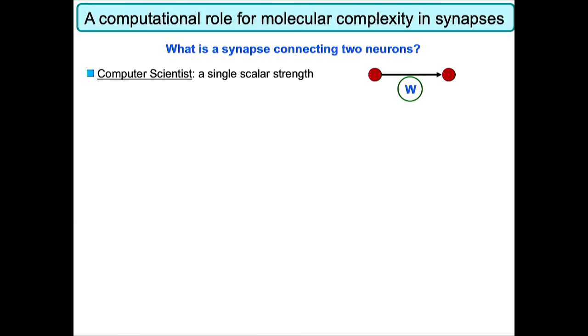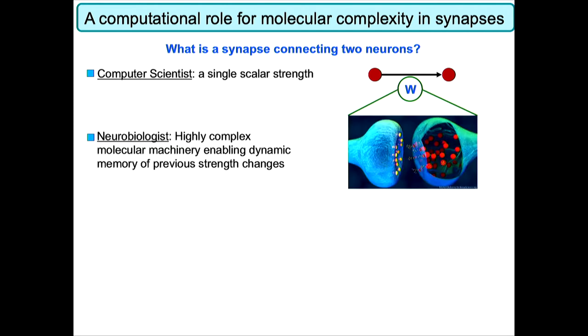One big difference between artificial networks and biological networks is the way that we model the connections, or the synapses, between pairs of neurons. If you ask a computer scientist what a synapse connecting two neurons is, they'll just say it's a number — a scalar number denoting how strongly one neuron affects another. But the neurobiological reality is that synapses are highly complex molecular machines that can have a dynamic memory trace of the entire history of synaptic strength changes that have occurred for a long time.